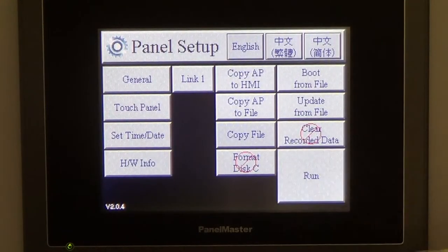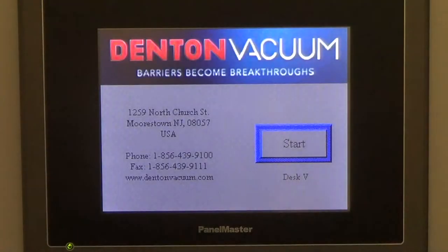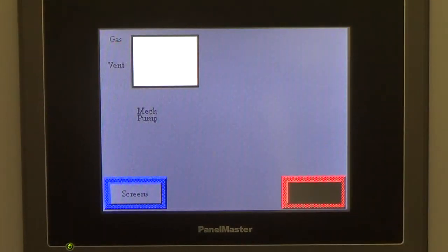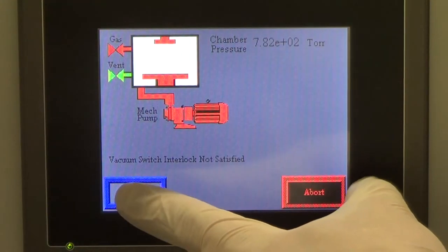Once the unit is on, press the run button on the lower right, followed by pressing the start button on the next screen. Now you are at the main screen, which gives you a system overview.